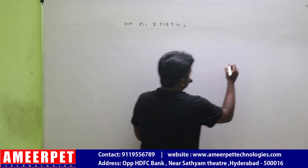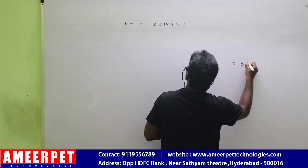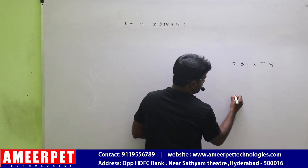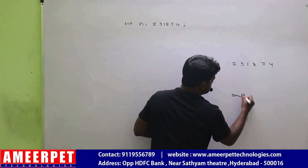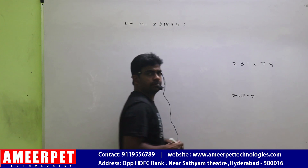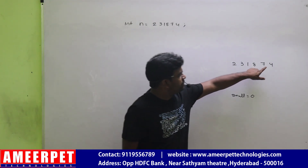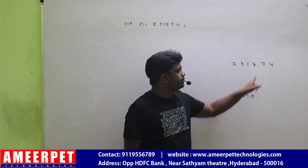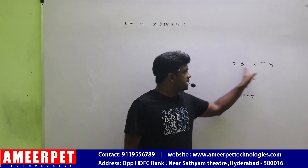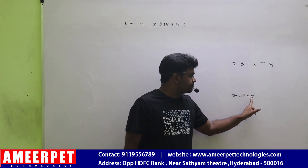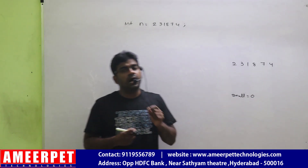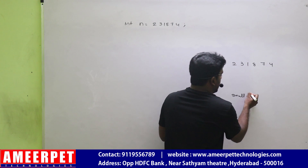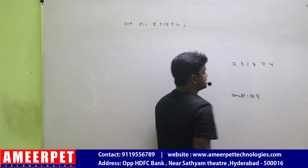Whenever you are going to find the smallest digit, please don't start with smallest digit equals to zero. Because every time we get a digit and find it is the smallest, we need to replace. But nothing will replace with zero, so finally the output will be zero.